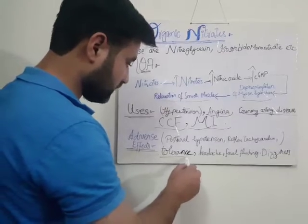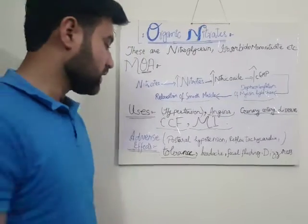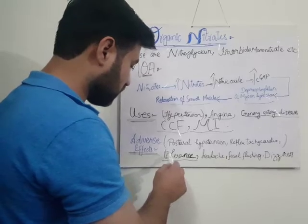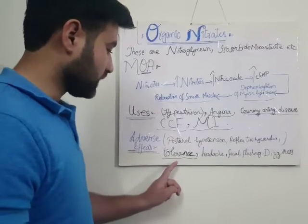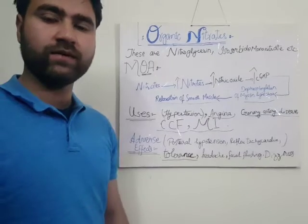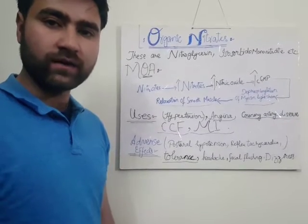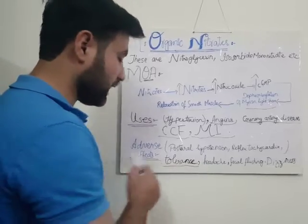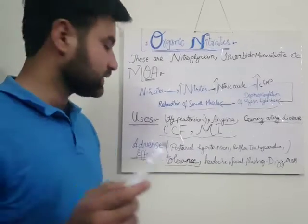Tolerance is also an adverse effect of these organic nitrates. To cope with this problem, we use the nitroglycerin patches for 12 hours and give a break for another 12 hours. This break is given at night because the demand of oxygen for the heart at night is decreased.